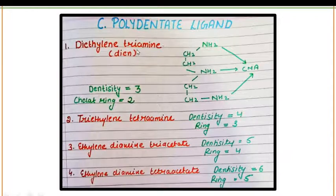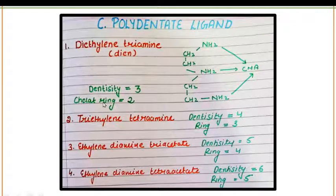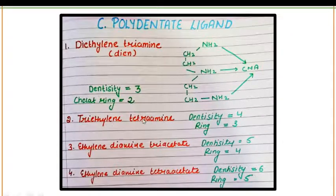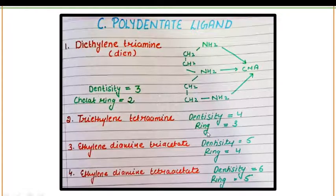To calculate the chelating ring, the formula is denticity minus one. If the denticity is three, then three minus one equals two chelating rings. In the case of triethylenetetramine, the denticity is four as there are four donor atoms — tetramine — so three rings are present.